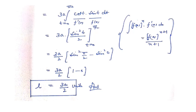Using the formula: if a function raised to a power is multiplied by its derivative, increase the power by 1 and divide by the new power. Here sin(t) is the function and cos(t) is its derivative, so sin(t) with power 1 becomes sin²(t)/2, evaluated from 0 to π/2. Plugging in limits: sin(π/2) = 1 and sin(0) = 0, so the final answer is 3a/2.